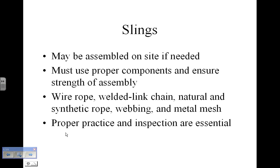Slings can be made out of various materials: wire rope, which we talk more about in the next chapter; welded link chain; natural and synthetic rope; webbing; and metal mesh. Proper practice and inspection are essential. That crane accident I had you look into was caused by a synthetic sling that had not been properly inspected, and as a consequence several people were killed and millions of dollars of damage was caused — not to mention the lawsuits that came about as a result of that little error of saying, 'that sling worked yesterday, it'll probably work today, even though it looks a little bit worn.' That's just an example of how a little bit of caution can go a long way.